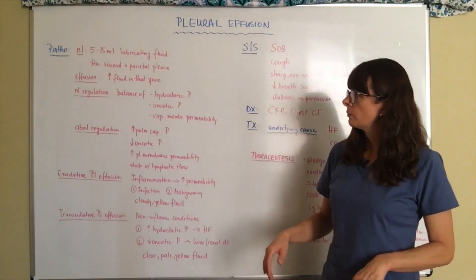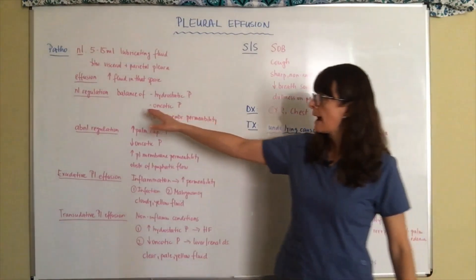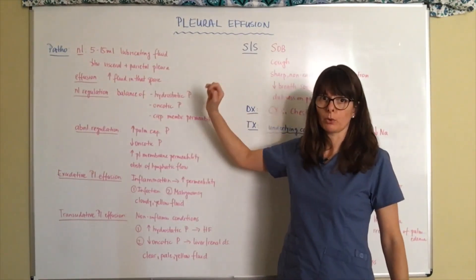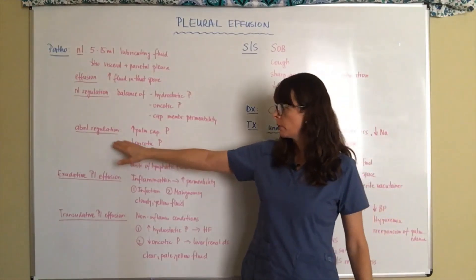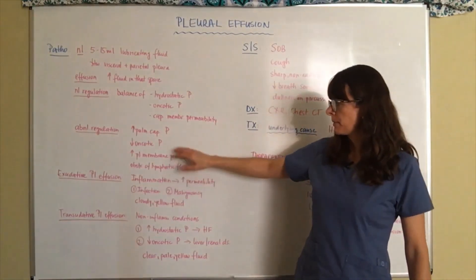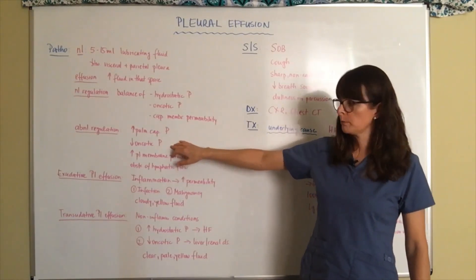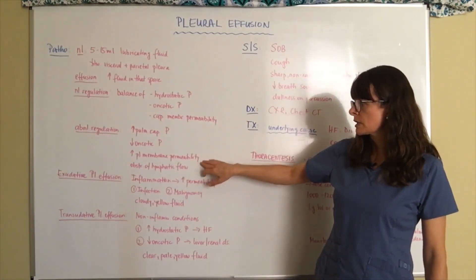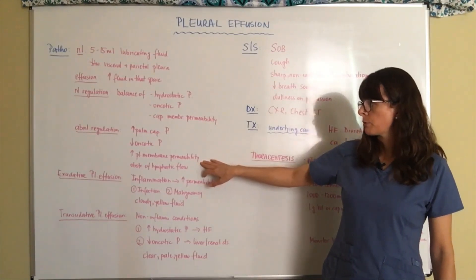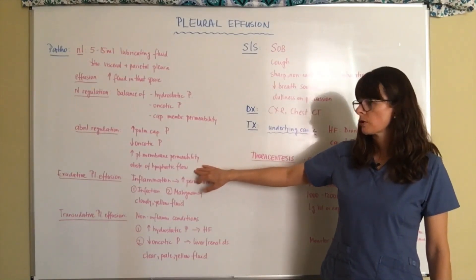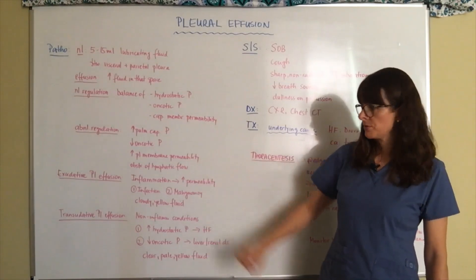Now when this regulation is out of balance, then we'll have a pleural effusion. So this abnormal regulation usually happens because of increased pulmonary capillary pressure, decreased oncotic pressure, or increased pulmonary pleural membrane permeability or obstruction of lymphatic flow.